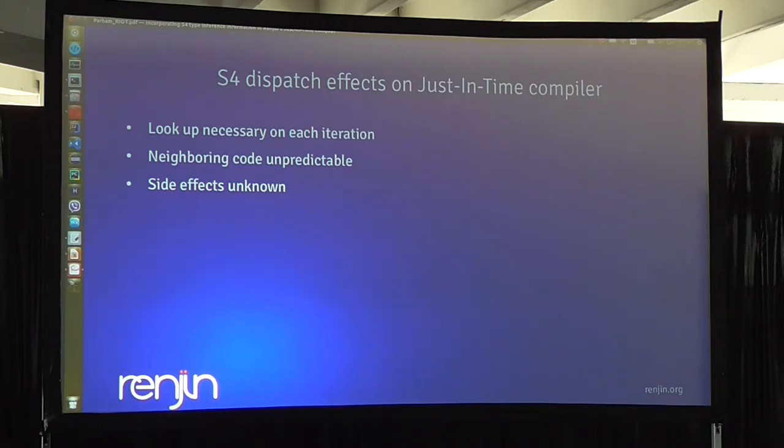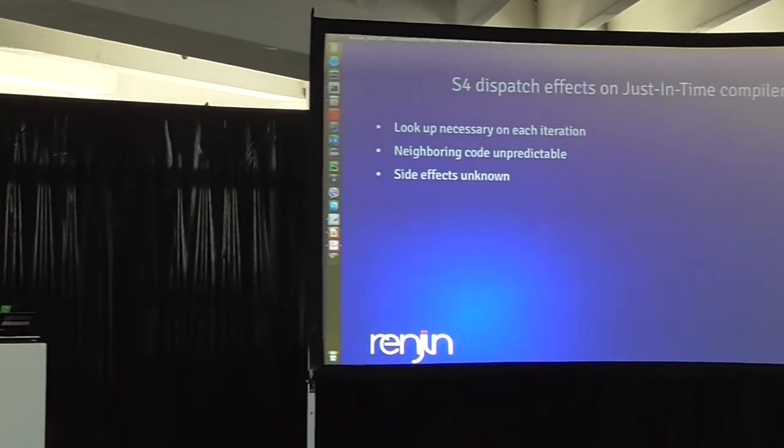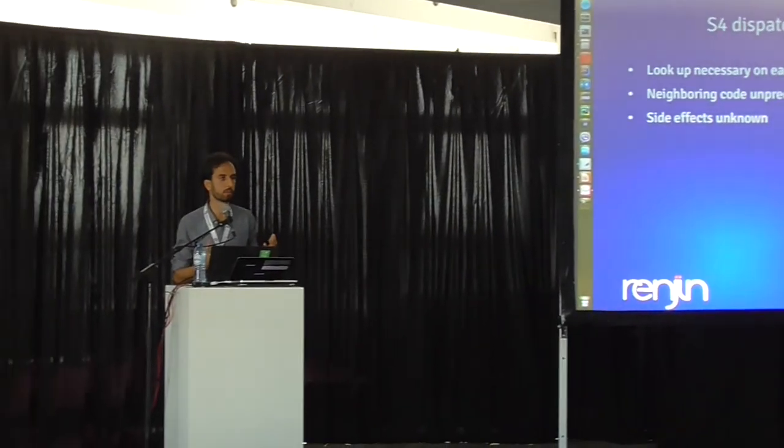This S4 dispatch has also effects on our JIT compiler, because whenever there is a S4 method dispatch and there is a need to do a lookup for these methods, then we cannot predict what the next steps would be. The lookup itself is costly as well, and we don't know whether there will be side effects outside the loop - what this method does.